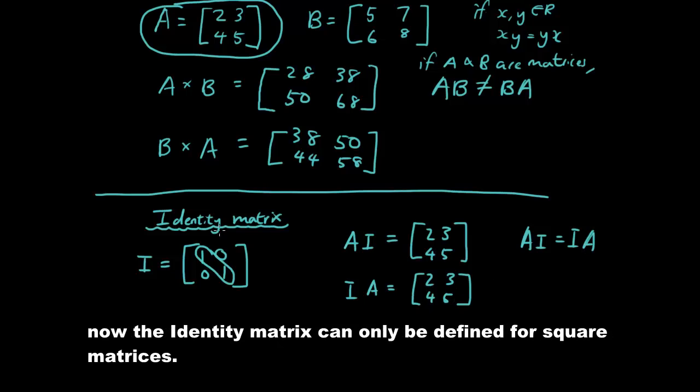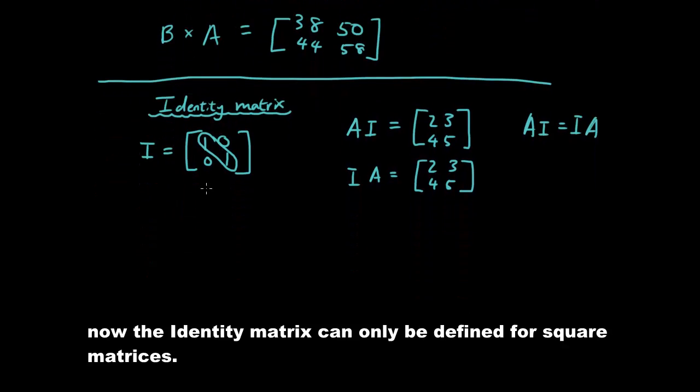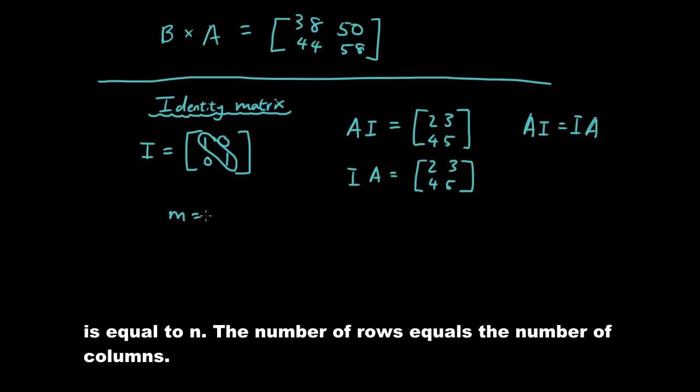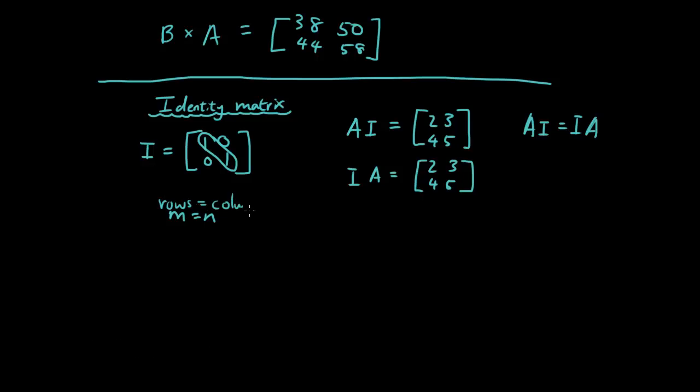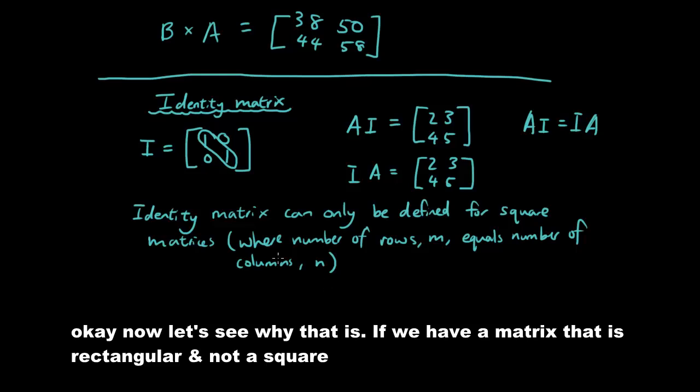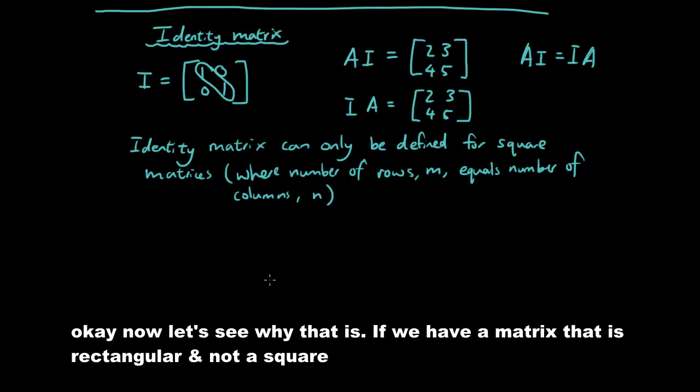Now the identity matrix can only be defined for square matrices. That is matrices where M is equal to N. The number of rows equals the number of columns. Okay, so I've written that out.